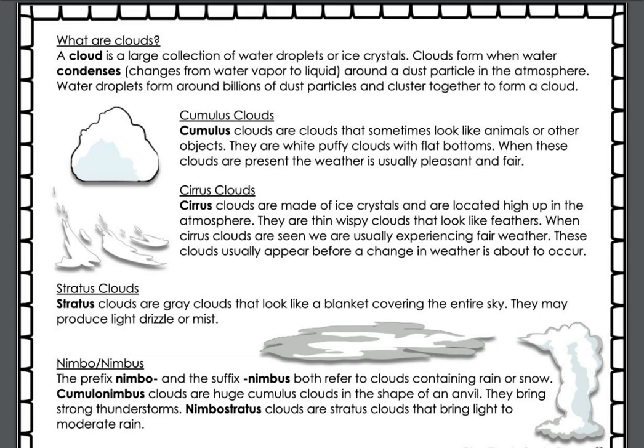Stratus clouds are gray clouds that look like a blanket covering the entire sky. They may produce light drizzle or mist.